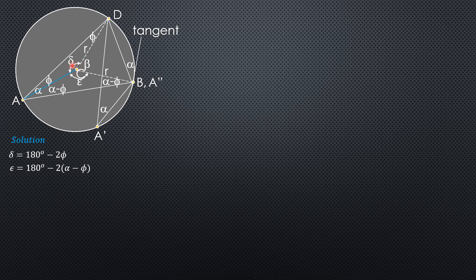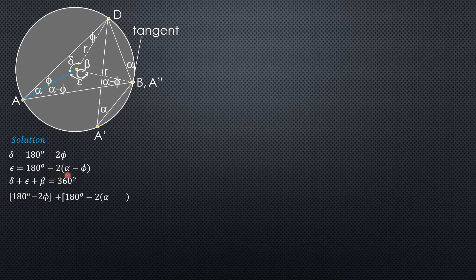Around point C, the total angle is 360 degrees: delta plus epsilon plus beta equals 360 degrees. That is a complete revolution. Substituting delta, which is 180 degrees minus 2p, and epsilon, which is 180 degrees minus 2 times the quantity alpha minus p, then plus beta equals 360 degrees.